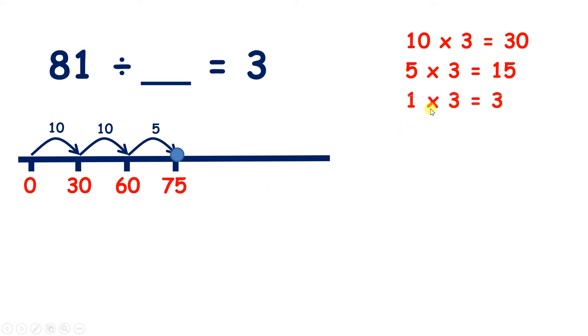And now we can count on in 3s. So 3 more is 78, and another 3 is 81.